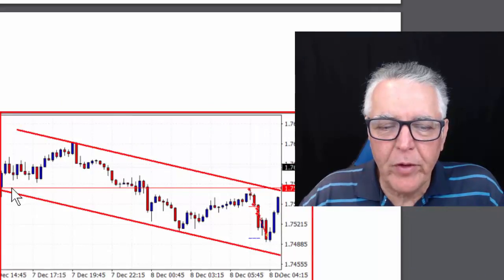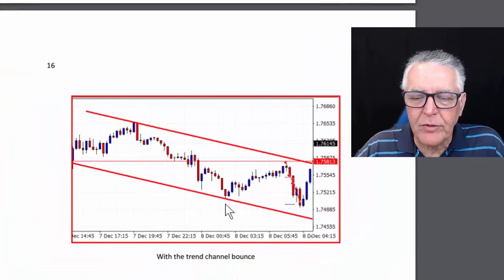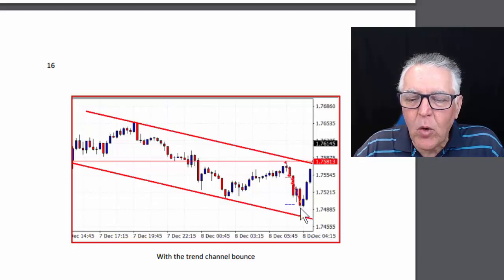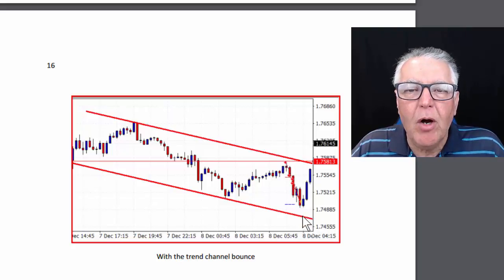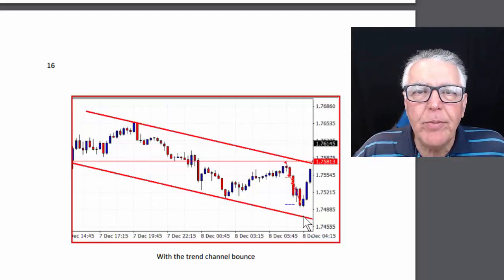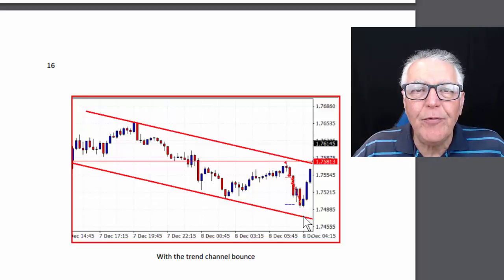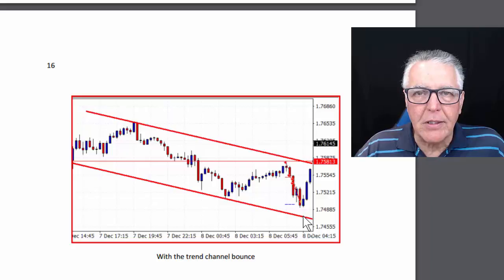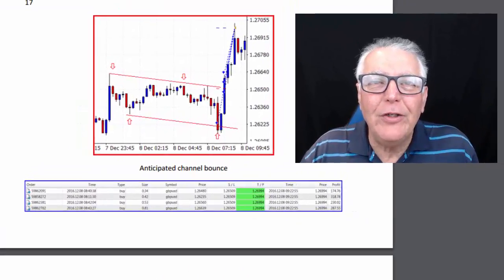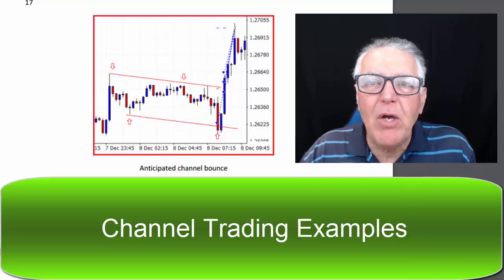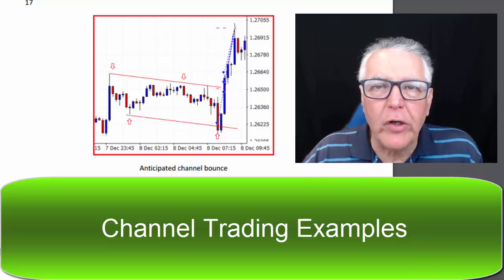Our next example is more conventional. We've got a one-two-three bounce channel, and then at number four, the predictable bounce area, the entry was made and went all the way down. It didn't quite reach the bottom of the channel, but it also shows that you don't need to go to the bottom of the channel with a lot of trades — you can use the efficiency of channel trade entries to get a good result.